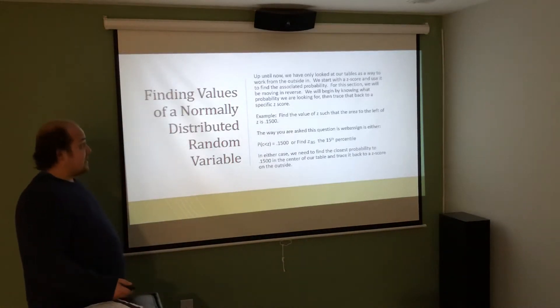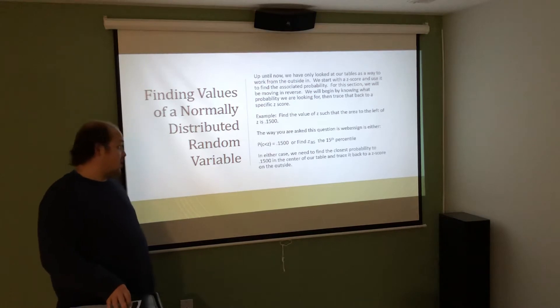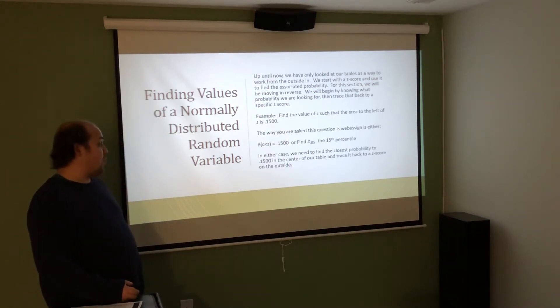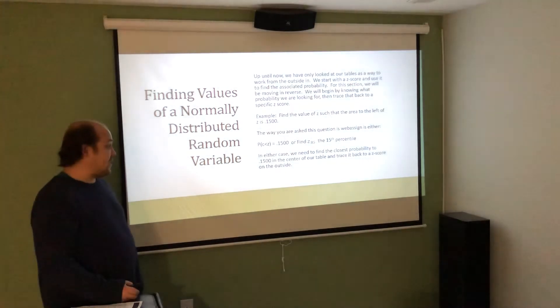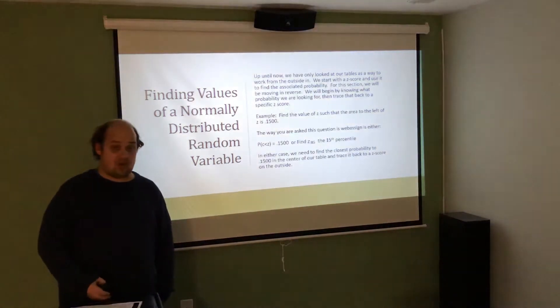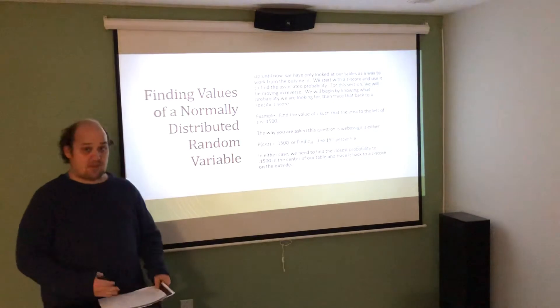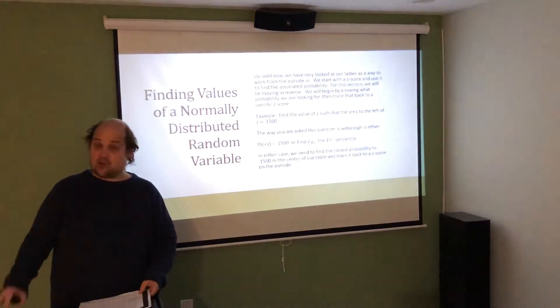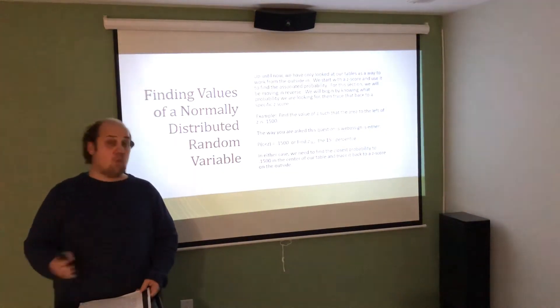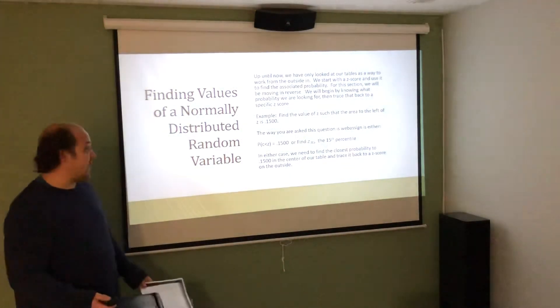So let's say that we want to find a value of z such that the area to the left of z is 0.1500. We're going to start by figuring out how to find that 15th percentile from this table. So we want to find the closest probability to 0.1500 in the center of our table and trace it back to the z-score. Basically, we're going in reverse. Instead of knowing the z-score and using it to find the probability, we know a probability, and we want to trace it back to find the z-score.